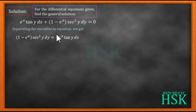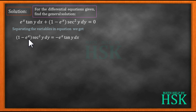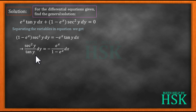We rewrite as: (1 - e^x) · sec²(y) dy = -e^x · tan(y) dx, moving the term to the right-hand side. Now cross-multiplying, we get: sec²(y) / tan(y) dy = -e^x / (1 - e^x) dx. The variables are now fully separated.